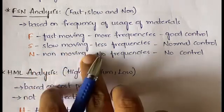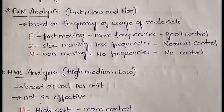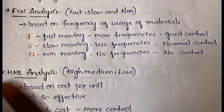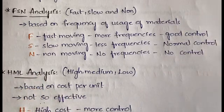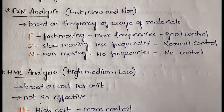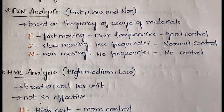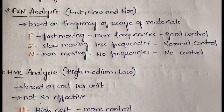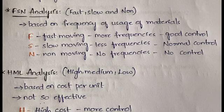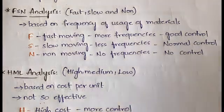Slow-moving materials have less frequency of usage and require normal or moderate control. Non-moving materials have no frequency of usage, so they require no control at all. In FSN analysis, materials are classified based on the frequency of usage into fast-moving, slow-moving, and non-moving.